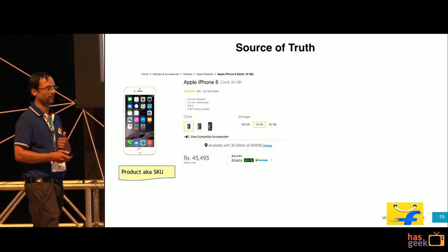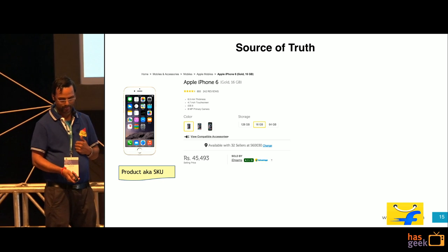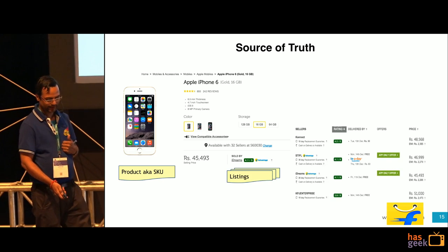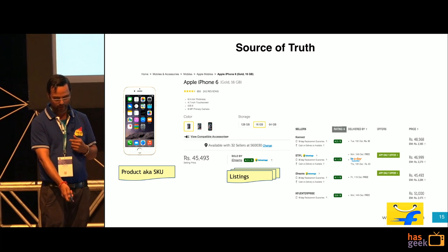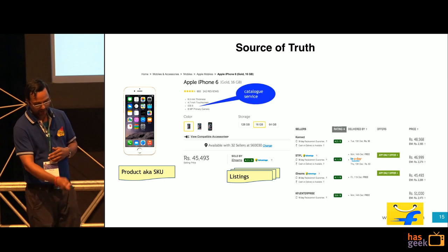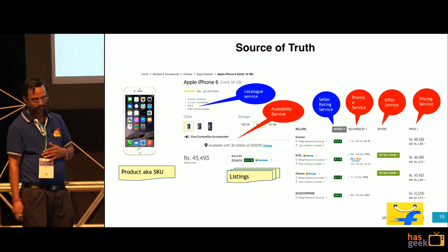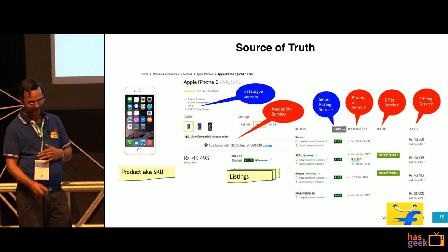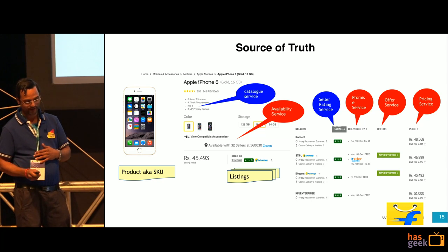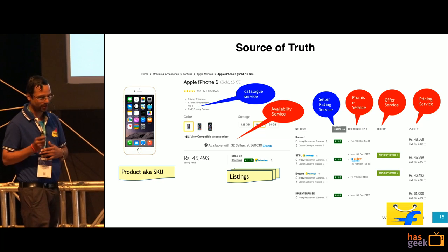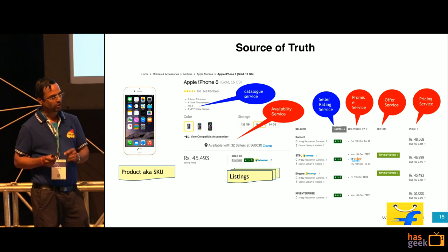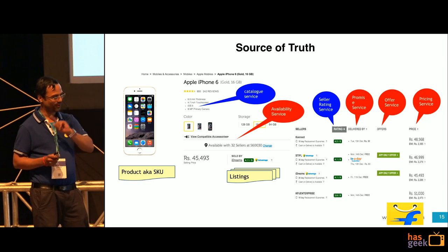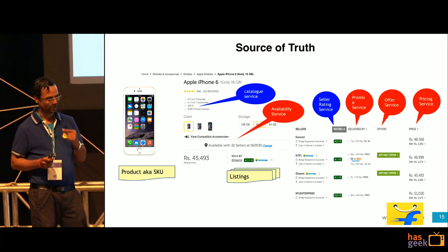What are the sources of truth? In the Flipkart product case, you have products and listings — for example iPhone 6 with multiple sellers. The catalog data comes from a catalog service, but availability, accelerating service, promise service, offers, and pricing service are all separate services. All these real-time attributes come from different services and all these services get called in real time.